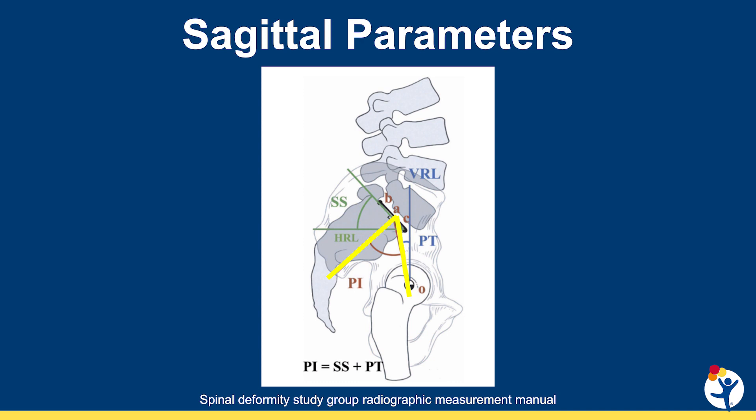Over the last decade, there has been greater attention paid to the global sagittal parameters of the spine and the sacrum and pelvis. The pelvic incidence is a fixed measure of the sacral pelvis and is drawn as a perpendicular to the end plate of S1 and a line drawn from that point to the center of the femoral heads.